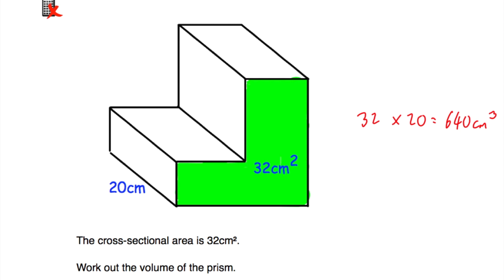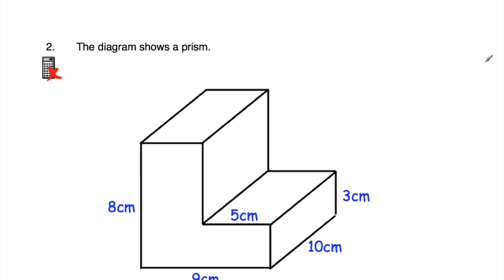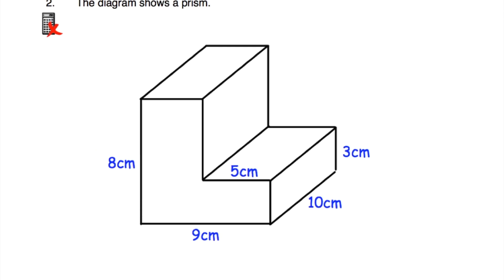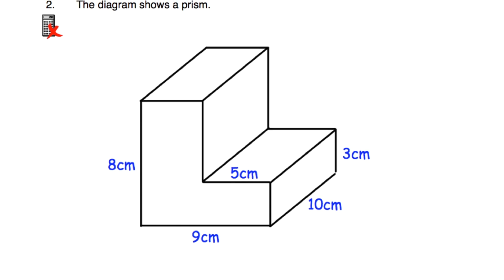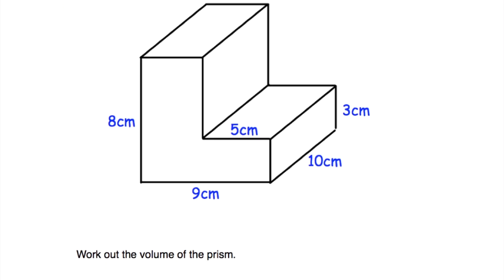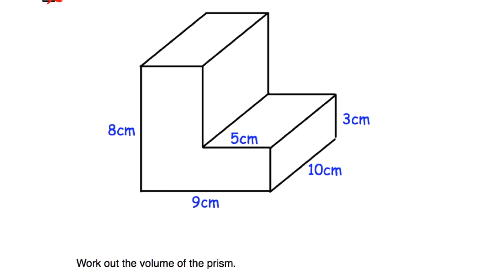Okay, let's have a look at question number two. We've been shown a diagram of an L-shaped prism, and we've been asked to find the volume. To find the volume, we're going to need to find the area of this L-shaped cross-section, and then multiply by how long the shape is, which is 10.